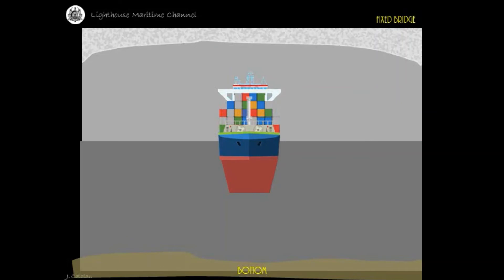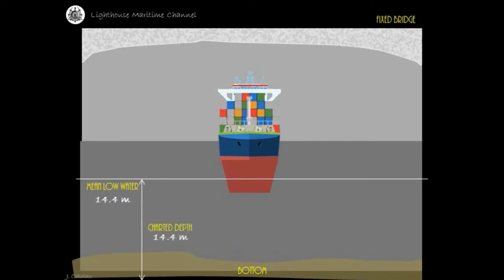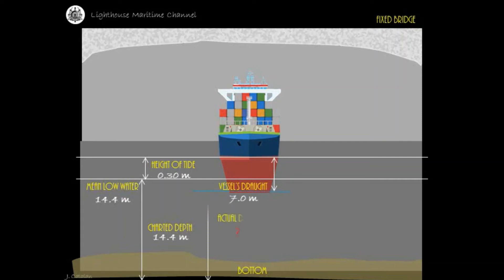From the chart title information of the locality: Mean Low Water is equal to 14.4 meters. The charted depth measured from the reference plane or datum is equal to 14.4 meters. The computed height of tide at that given time is equal to 0.30 meters. The vessel's draft is equal to 7.0 meters with an even keel trim. You are required to calculate for the actual depth of the water at that given time, and also the under keel clearance of the vessel.